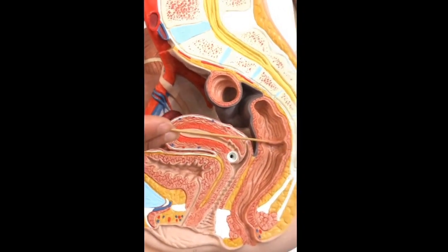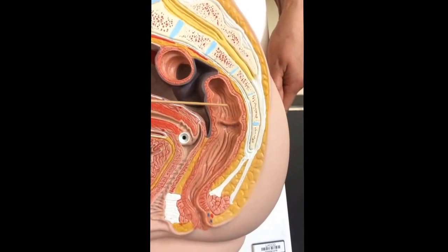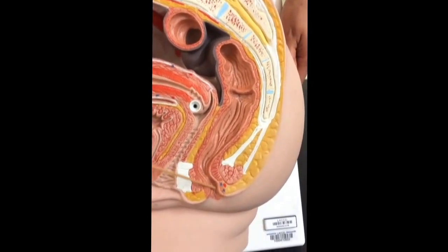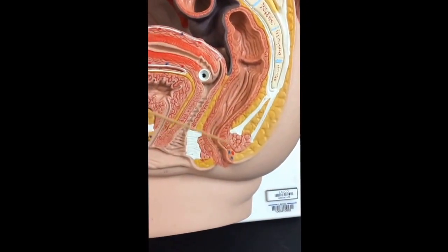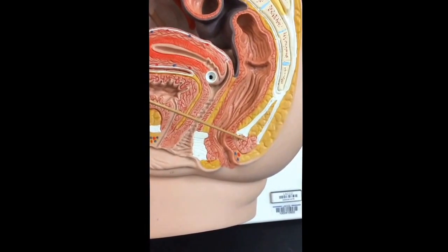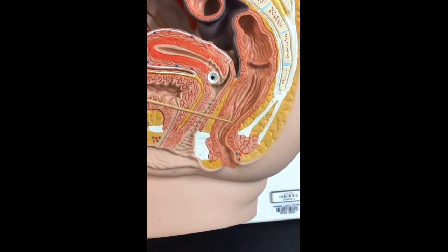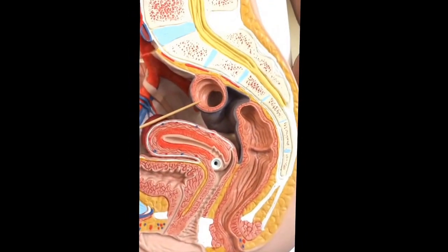Over here we have the rectum, and here is the anus with the sphincter muscles. And up here is the sigmoid colon.